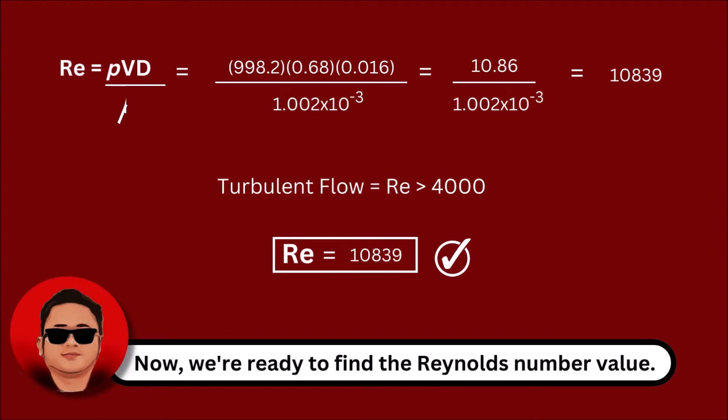Substitute all the data into the equation and calculate the Reynolds number. This time, we've got a Reynolds number of 10839. This is more than 4000, which means this is a turbulent flow.